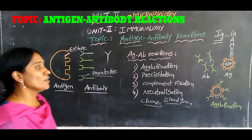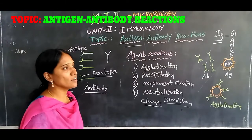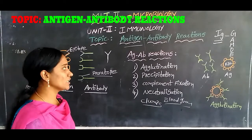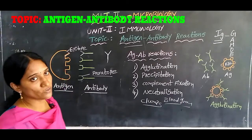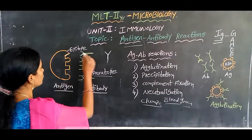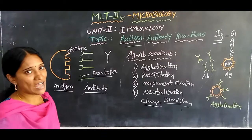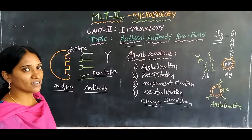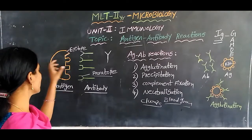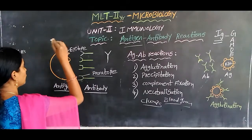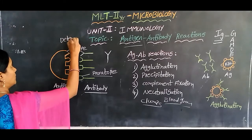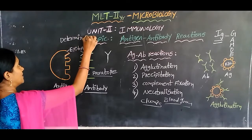The second type is precipitation. A soluble antigen combines with antibody to produce an insoluble precipitate, which can be observed in test tubes. Antibodies are bivalent — they have two binding sites — while antigens are multivalent with different antigenic sites. Epitopes are also called antigenic determinants.